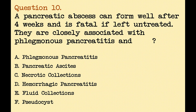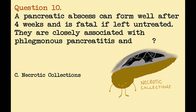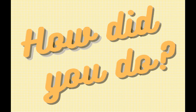Last question, Question 10: A pancreatic abscess can form well after 4 weeks and is fatal if left untreated. They are closely associated with phlegmonous pancreatitis and? The correct answer is necrotic collections. Pancreatic abscesses will appear as hypoechoic masses with thick walls, septations and air. That's the end of round 2. There were 10 points in that round.